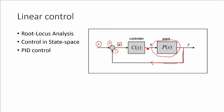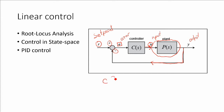That signal is fed to the controller, which can now update the input to the plant and adjust it in order to obtain the goal that we want. So our question is how to create that controller such that the error will be driven to zero.